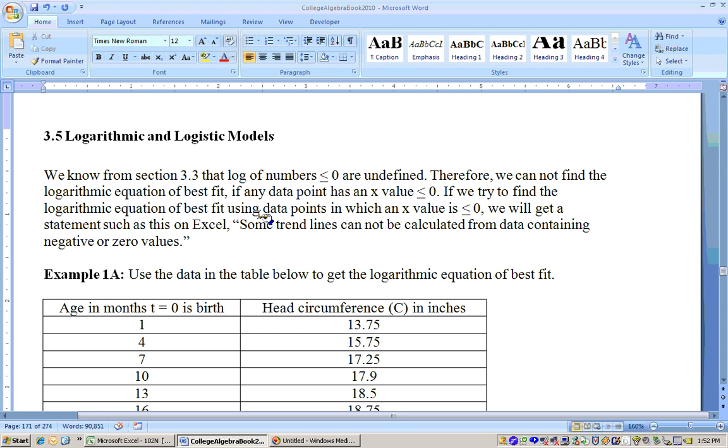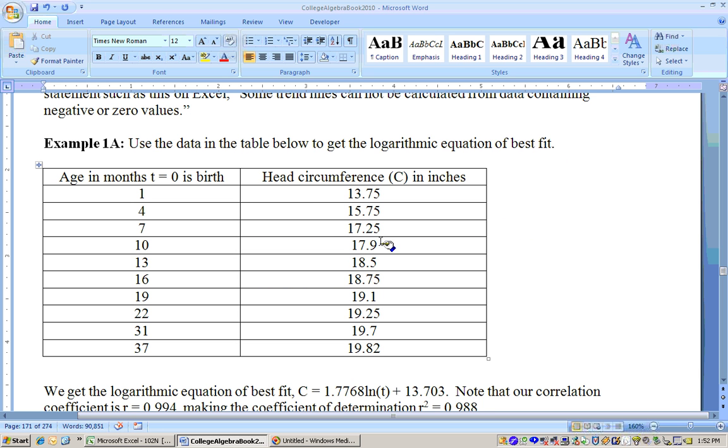We can't get the logarithmic equation of best fit if there's any data points that are less than or equal to 0. Excel will give a statement such as some trend lines cannot be calculated. I'll always give you positive values here when we do a logarithmic equation of best fit. Same thing happens with power functions. Even if it says t equals 0 is birth, we would have to either adjust that or not use that data point.